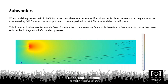Here we're looking at a model of a cardioid flown array. You can see that by using a cardioid array we get significant attenuation to the rear of the array — this is very useful for keeping low-frequency energy off the stage while projecting it forward into the audience space, as you can see from the plots in this side view of a sub placed into an audience space.